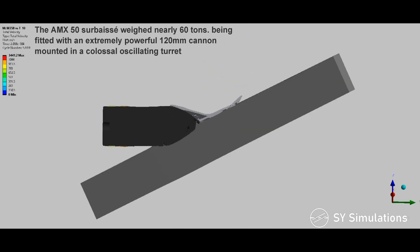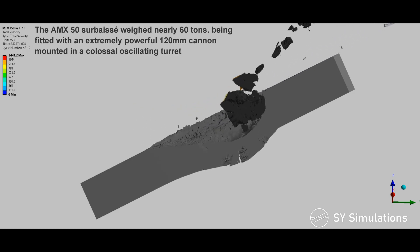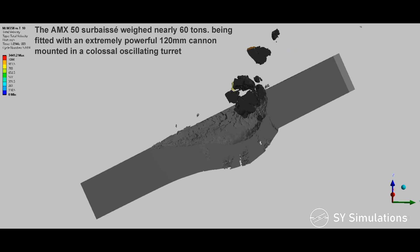The AMX-50 Surbaisse weighed nearly 60 tons, being fitted with an extremely powerful 120mm cannon mounted in a colossal oscillating turret.